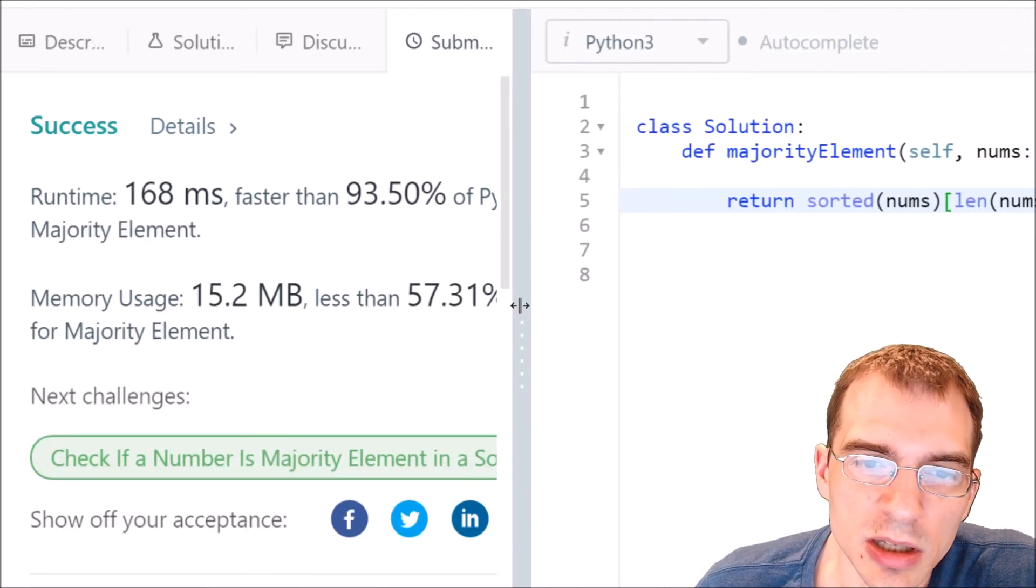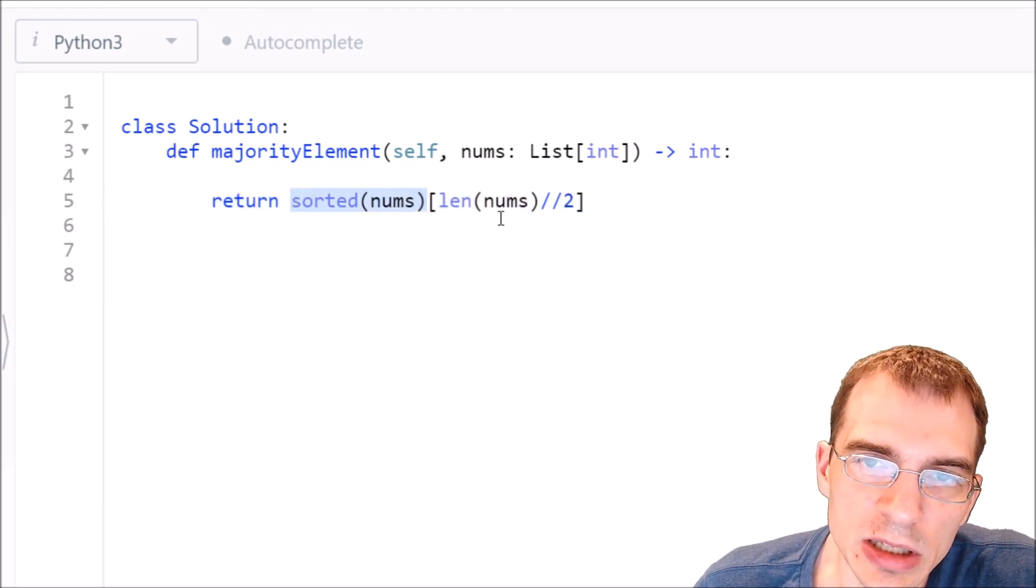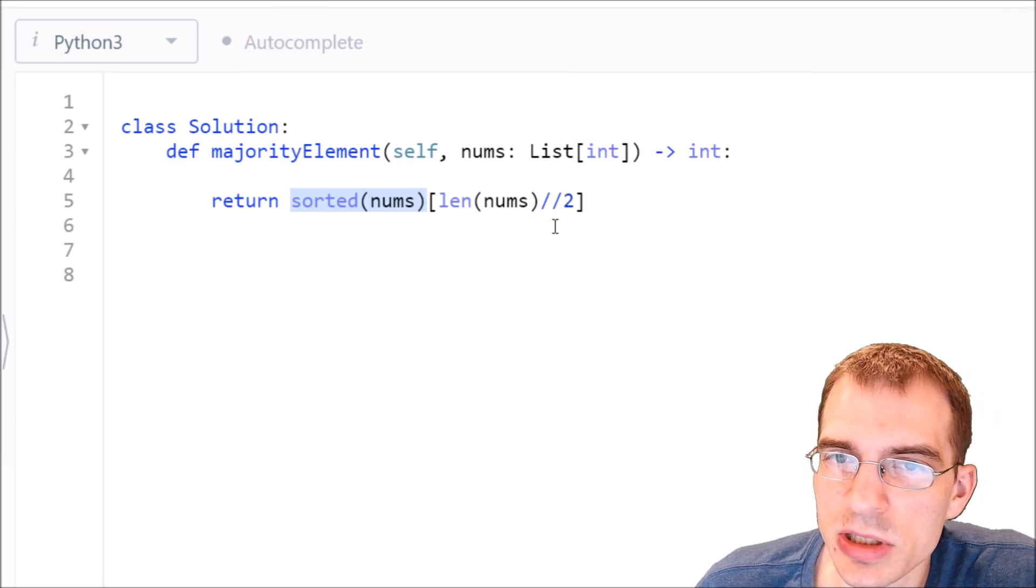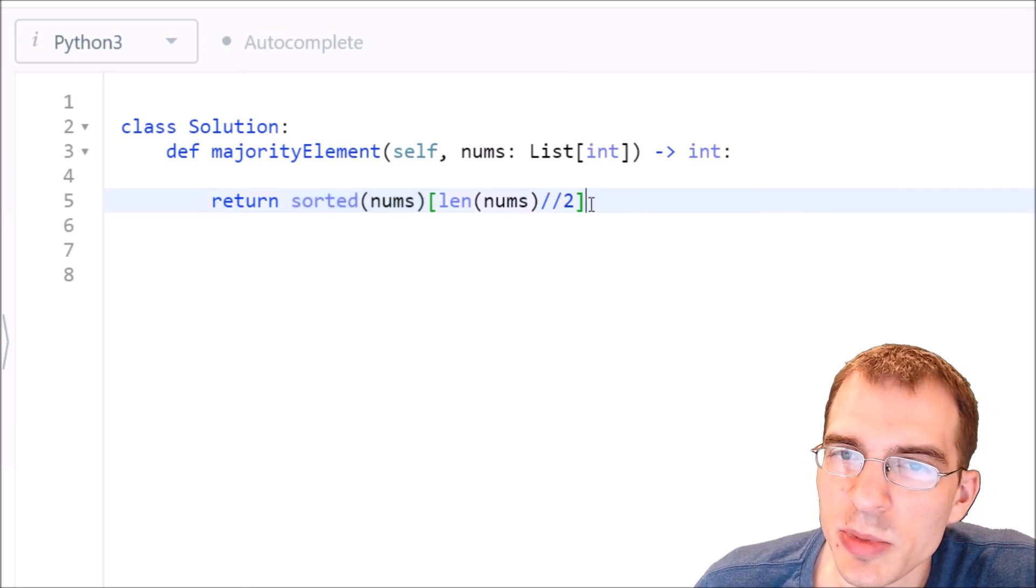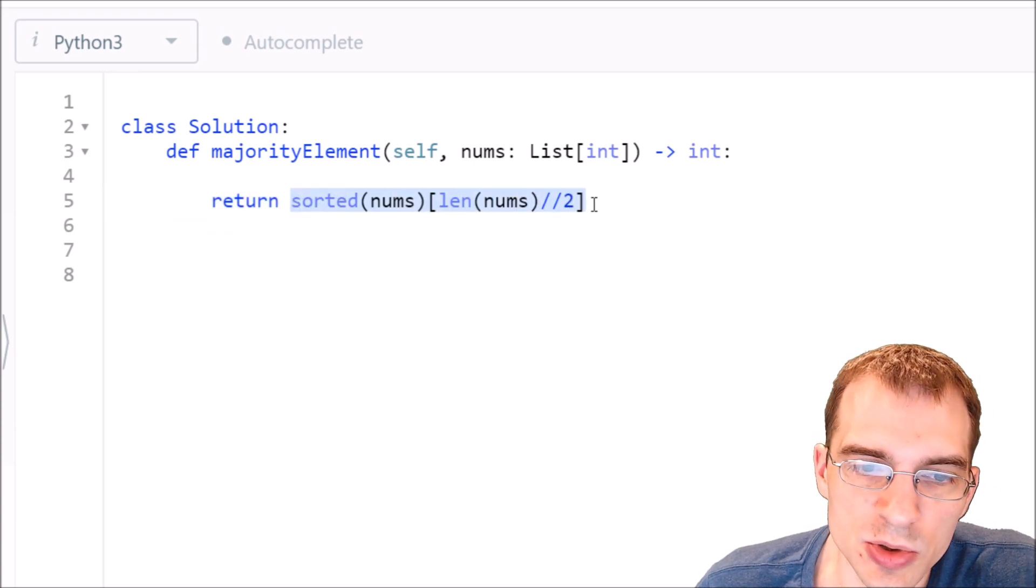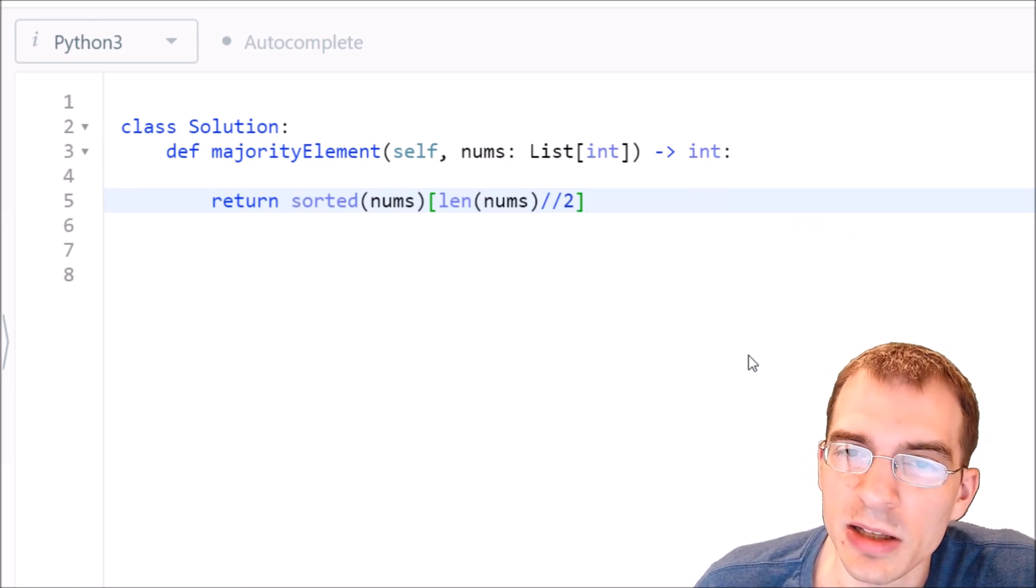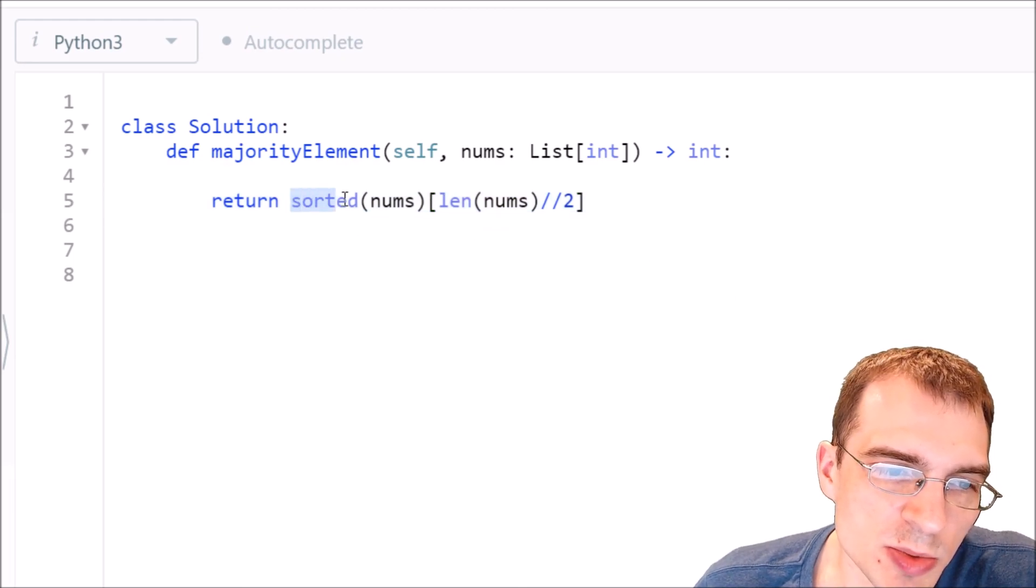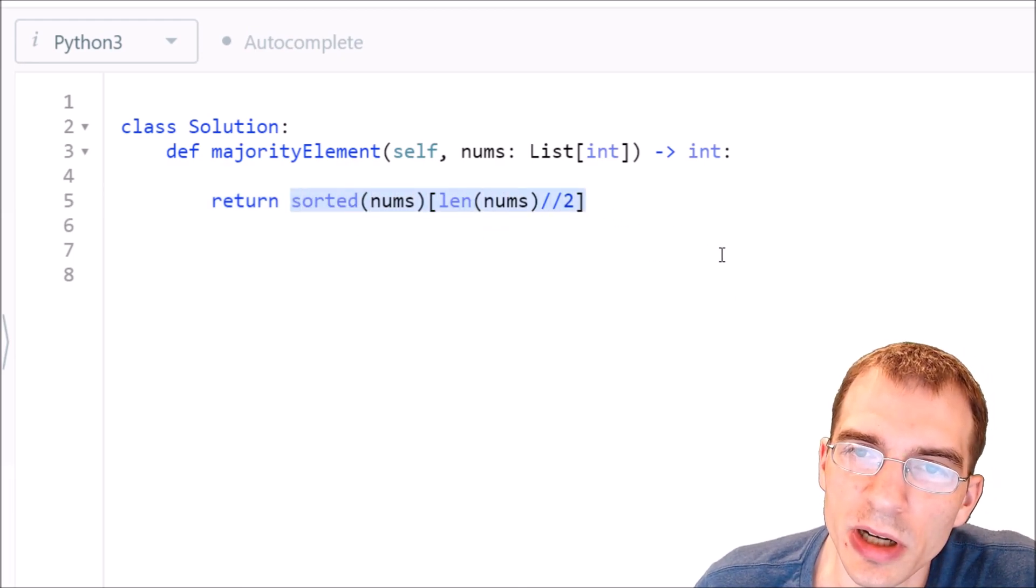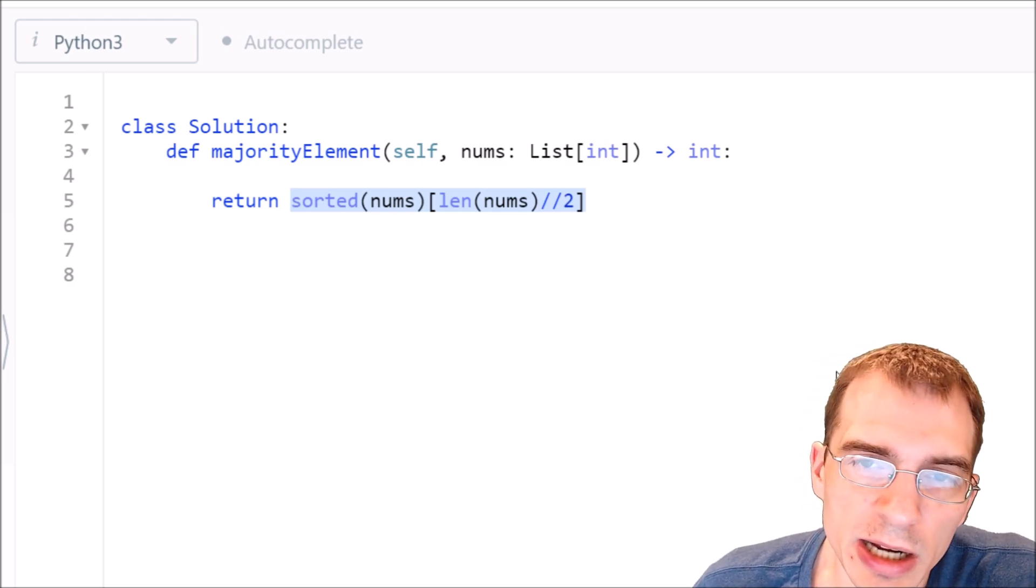This is actually an O of n log n solution because the fastest sorting algorithms you can do are on the order of n log n. That's what a sorting operation takes. So in the limit of computational complexity this would actually be worse than the first solution, but for perhaps shorter and simpler problems this is actually faster, at least on LeetCode. And it's a simpler solution in terms of the amount of code necessary to write and perhaps a bit more elegant conceptually than our first crack at the problem.